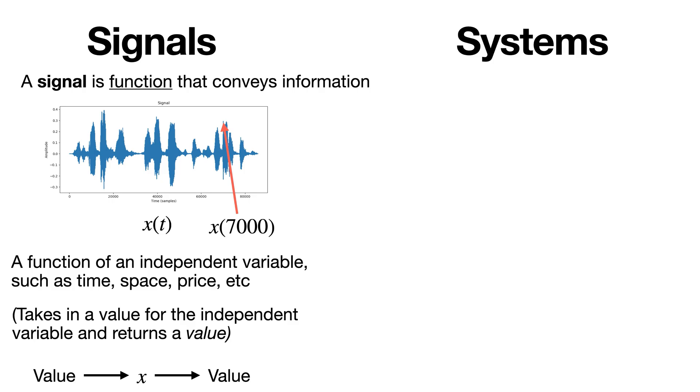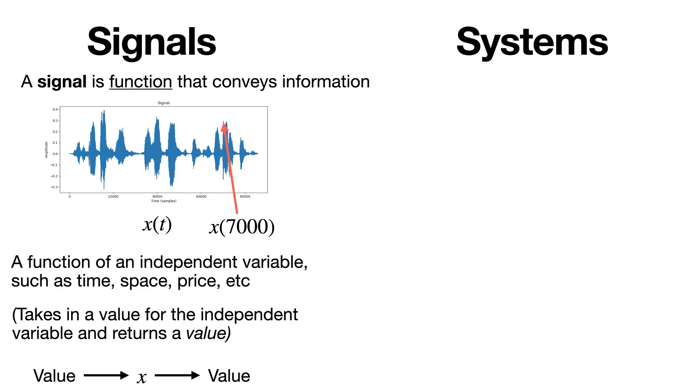Now let's move on to systems. Systems are also functions. However, rather than taking in values, systems take in signals and output signals. In other words, a system takes in signals, does something to them or processes them, and then outputs one or more signals at the end. Signals and systems are at the heart of signal processing. Signals are the things you're doing the processing on, and systems are the things doing the actual processing.